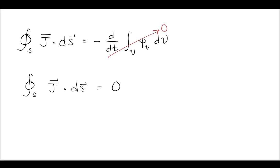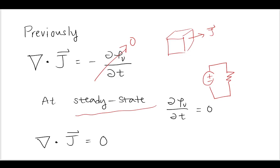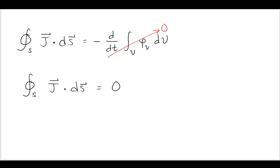And in this expression, at steady state, this part goes to zero. We can also equivalently express this divergence of J being equal to zero as this closed surface integral being equal to zero.